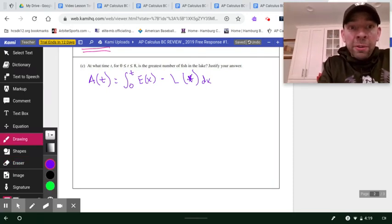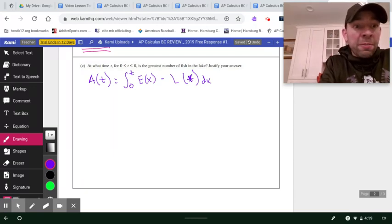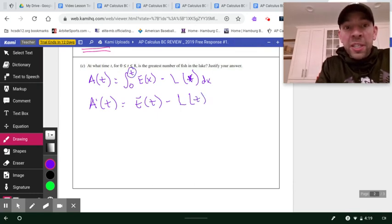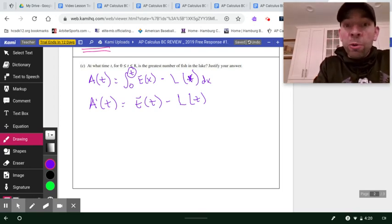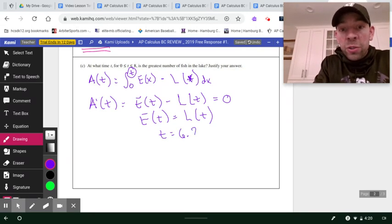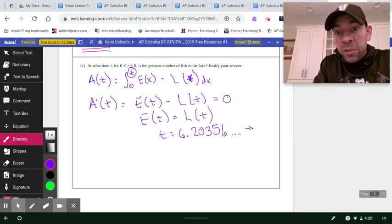To find the greatest number of fish or to find the absolute max, I need to first find any critical points that this function might have. So I'm going to derive this function using the second fundamental theorem of calculus. There's no need to use the chain rule here because the upper bound was just a singular T. Now if that upper bound had been T squared or 2T, applying the chain rule would have been very valuable. I'm going to set that derivative equal to zero. I'm going to add the L of T function to the other side. On my calculator, I'm going to graph E of T and L of T and find the intersection. And my calculator is saying they're going to intersect at 6.20356. I'm going to exit back to my home screen and I'm going to store that value in something like an alpha B.